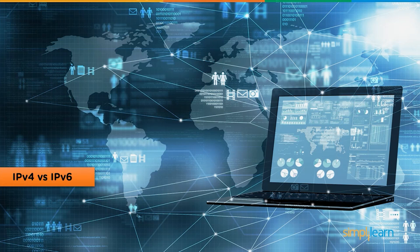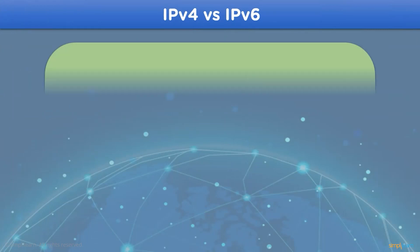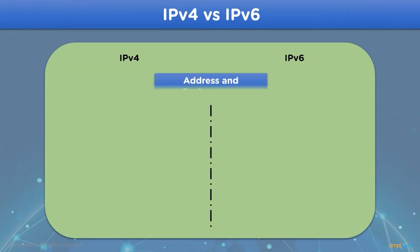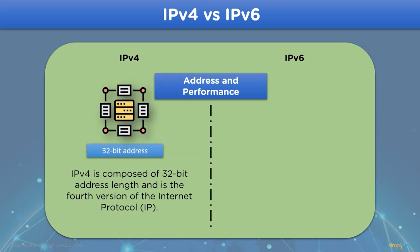Let's take a look at the differences between IPv4 version addresses and IPv6 version addresses. This will allow us to choose the best IP address for a network. The first difference is address and performance. In accordance with address size, IPv4 version is composed of a 32-bit address length, and is the fourth version of the Internet Protocol.